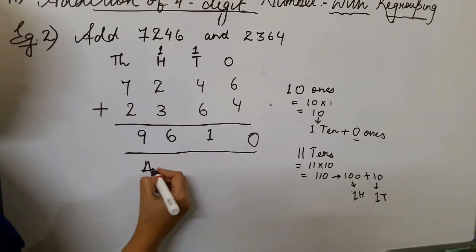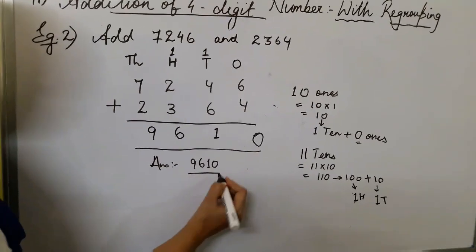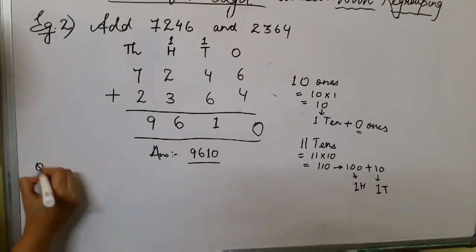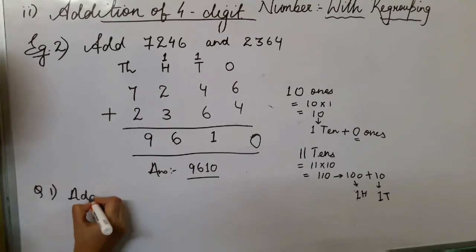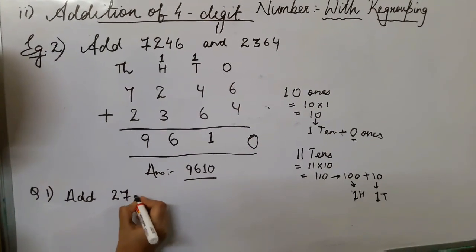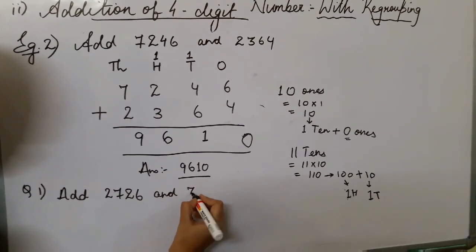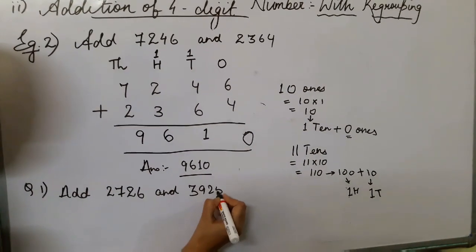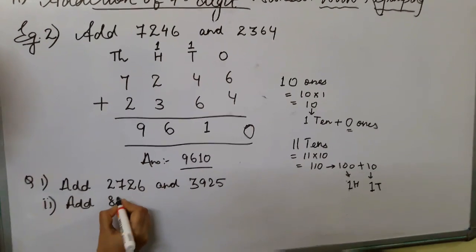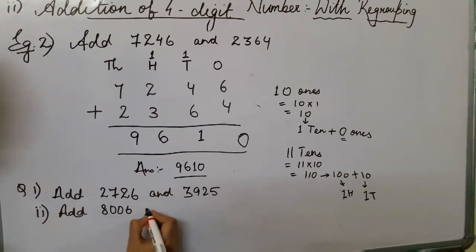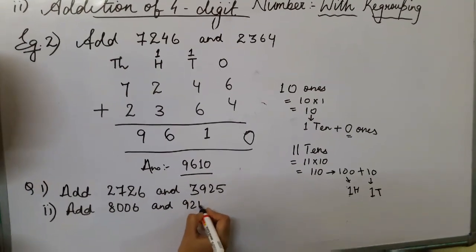So the answer is 9,610. Here are some questions for you — add the numbers with regrouping. Add 2,726 and 3,925. Second question: add 8,006 and 9,213.